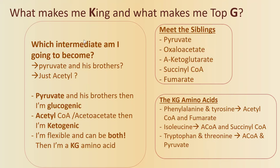The purely ketogenic amino acids are lysine and leucine. The amino acids that are both ketogenic and glucogenic are isoleucine, phenylalanine, tryptophan, threonine, and tyrosine. To summarize: if I'm ketogenic, I'll be converted into acetyl-CoA or acetoacetate; if I'm glucogenic, I'll become pyruvate or the other sibling intermediates of the TCA cycle.